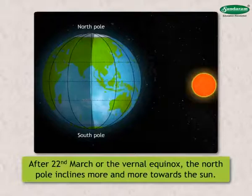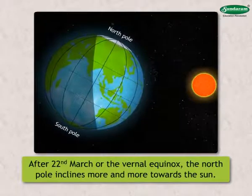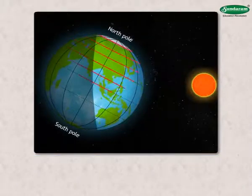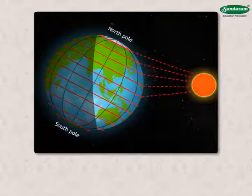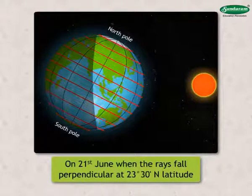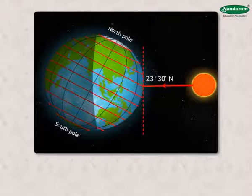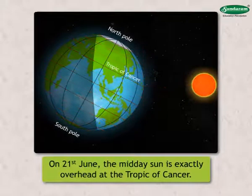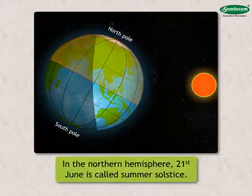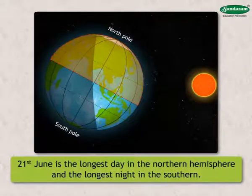Now we shall study about summer solstice. After 22nd March, or the vernal equinox, as the earth moves forward in its orbit, the north pole inclines more and more towards the sun. As a result, one by one, consecutive latitudes in the northern hemisphere start receiving perpendicular rays at noon. This continues up to 21st June, when the rays fall perpendicular at 23 degrees 30 minutes north latitude. This latitude is called the Tropic of Cancer. On this day, the midday sun is exactly overhead at the Tropic of Cancer. In the northern hemisphere, 21st June is called summer solstice.